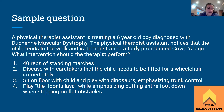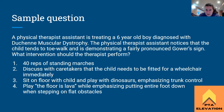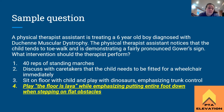Sample question: A physical therapist assistant is treating a six-year-old boy diagnosed with Duchenne muscular dystrophy. The PTA notices that the child tends to toe walk and is demonstrating a fairly pronounced Gowers sign. What intervention should the therapist perform? One: 40 reps of standing marches. Two: discuss with caretakers that the child needs to be fitted for a wheelchair immediately. Three: sit on the floor with the child and play dinosaurs while emphasizing trunk control. Four: play the floor is lava while emphasizing putting the entire foot down when stepping on flat obstacles. The answer is number four.